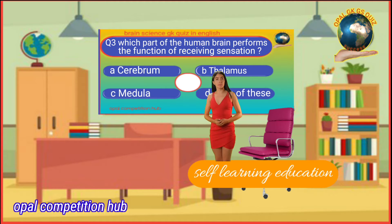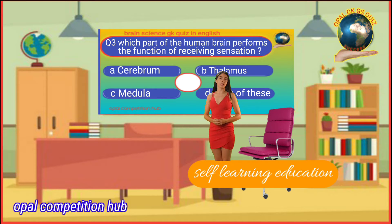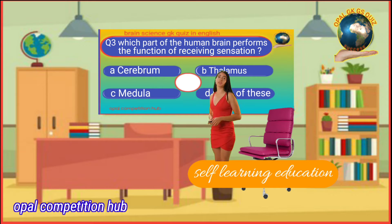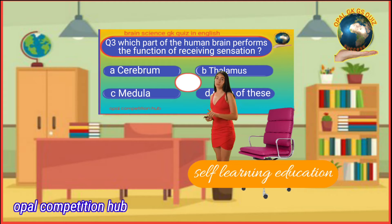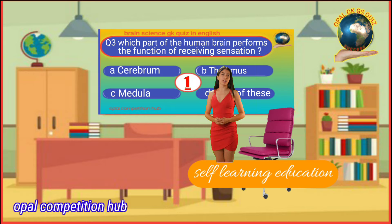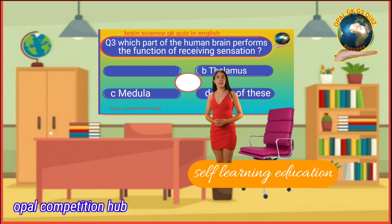Question number 3: Which part of the human brain performs the function of receiving sensation? Option A: Cerebrum. Option B: Thalamus. Option C: Medulla. Option D: None of these. Your time starts now. Your answer will be Option A: Cerebrum.